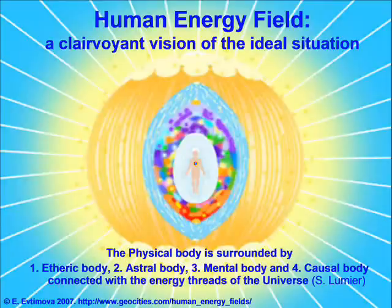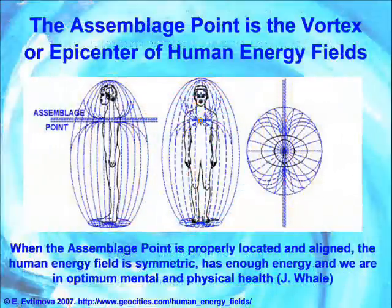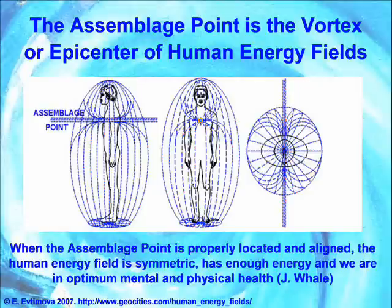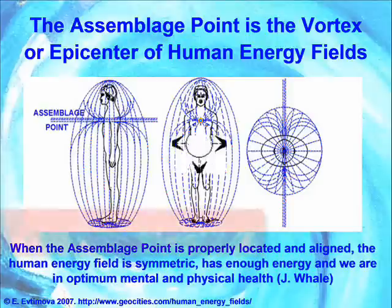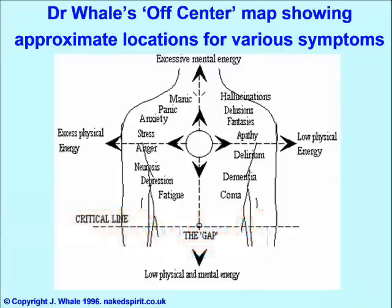In his three papers, published for the first time in the Positive Health Journal in 1996, Dr. Whale has given a comprehensive description about the facts and the significance of the assemblage point for the benefits of mental and physical health, providing methods to restore it to its optimum location. The off-center map in figure 2, first presented in his second paper, is of the most importance, as it exposes the knowledge of the approximate locations for various symptoms. The central circle on Whale's map indicates the optimum assemblage point location for health.